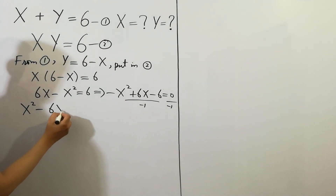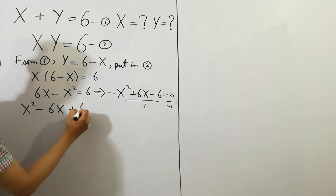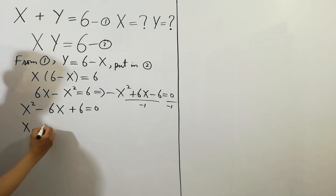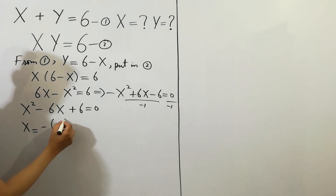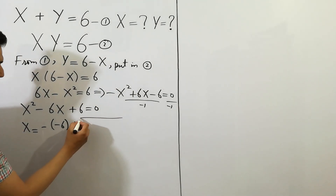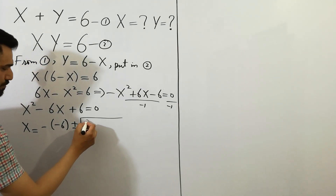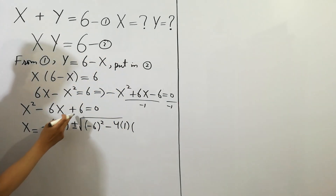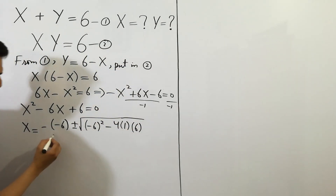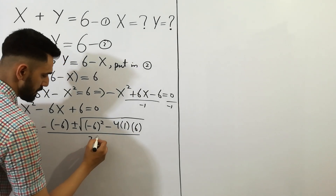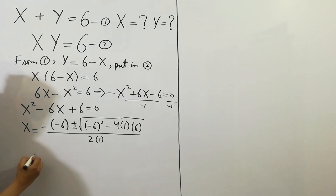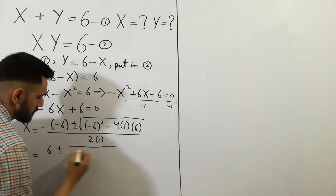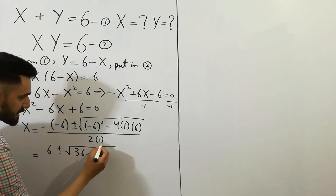Dividing both sides by minus 1, we get x squared minus 6x plus 6 is equal to 0. Now applying the quadratic formula: x is equal to minus b plus or minus square root of b squared minus 4ac, divided by 2a. Here a is 1, b is minus 6, and c is 6.